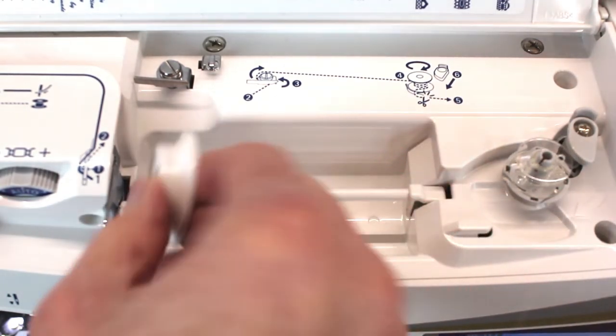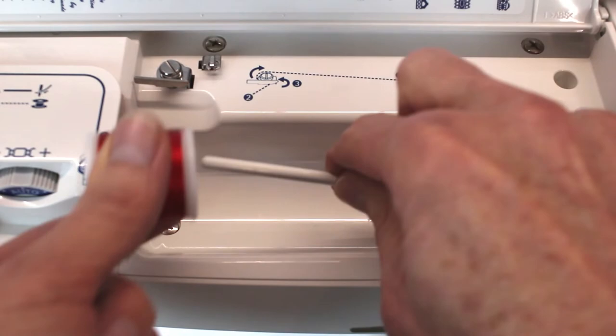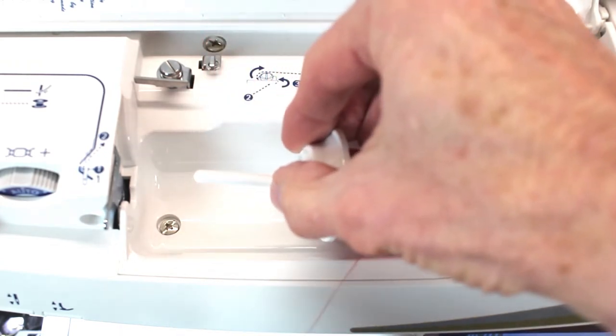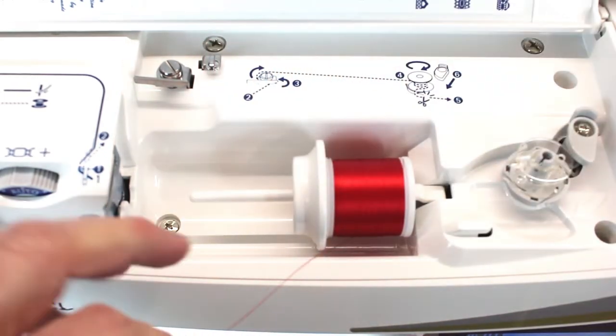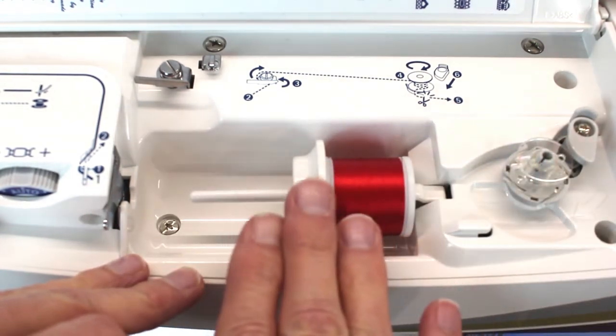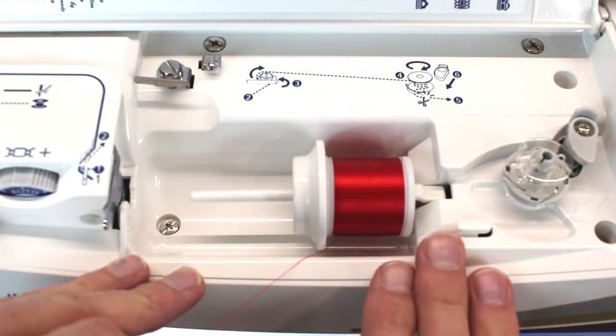The next thing is we're going to take our spool cap off and we're going to put our spool of thread on, making sure that our spool cap is larger than our spool of thread. That's very important. We don't want to get our thread to hang up coming off the spool and cause an issue for us. Even if it's winding a bobbin or threading the machine, the same rules apply with our spool cap and the size of our spool.